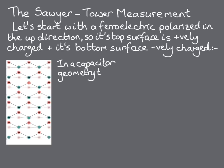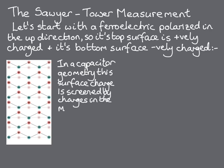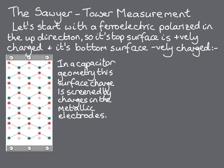The ferroelectric is placed in a capacitor geometry with metallic electrodes adjacent to each surface. The free charges in the metals then screen the surface charges of the ferroelectric. At the top surface, electrons in the metal accumulate at the interface, and at the bottom surface, electrons are depleted or holes accumulate, whichever picture you prefer.